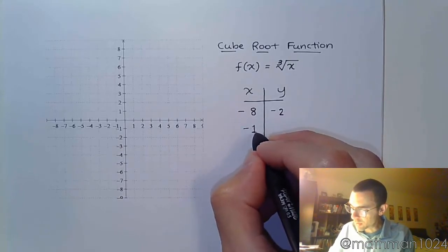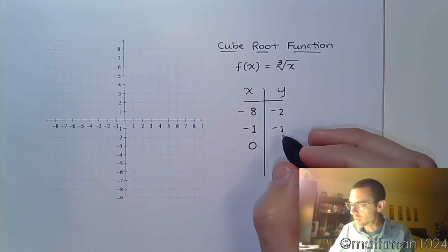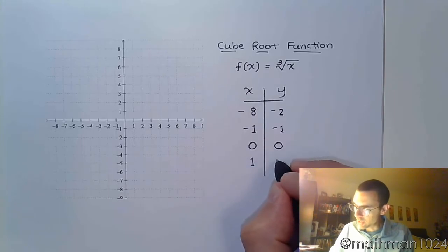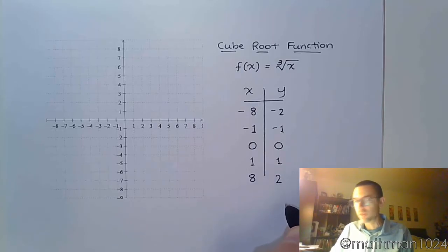Negative 1 is another perfect cube, and I get negative 1. 0 is almost always a good choice for us. The cube root of 0 is 0, the cube root of 1 is 1, and of course the next perfect cube is 8, and the cube root of 8 is 2.